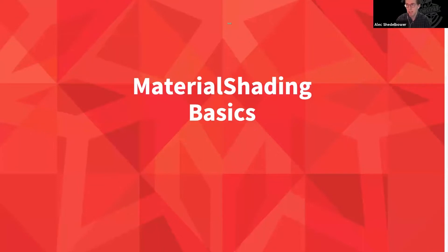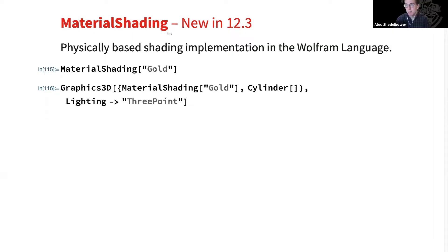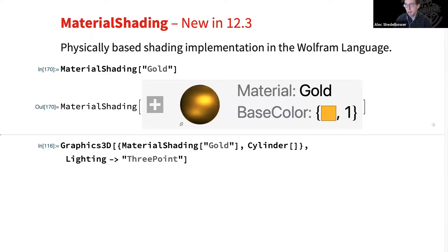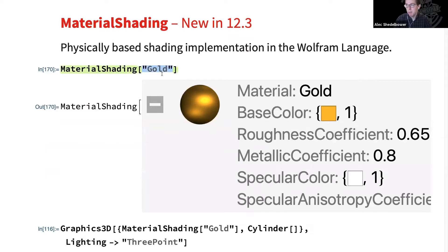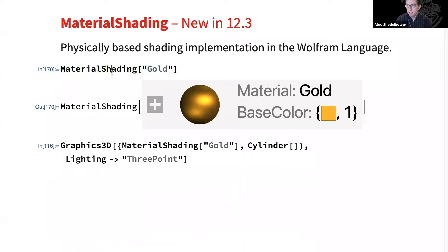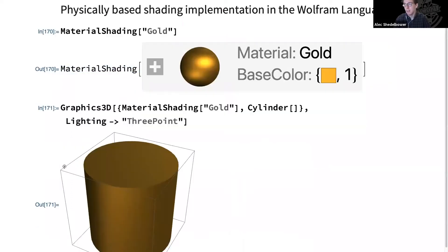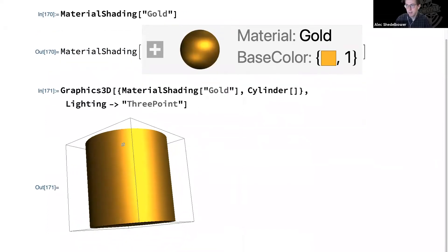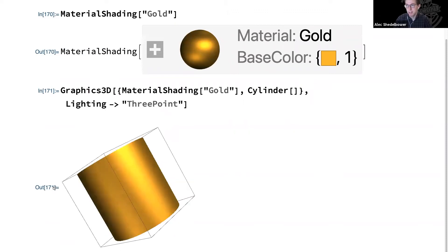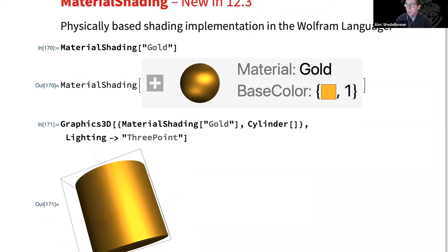Now we'll go into how to use it with material shading. So MaterialShading is a new symbol as of version 12.3, and it's our physically based shading implementation in the Wolfram language. If you're familiar with any of the other recent shading functions like ToonShading or HatchShading, this one should be very familiar with the way it works. So if we evaluate by itself, we get this nice summary box where we see a preview of the material and some of its parameters. I'm using the named material preset gold here. And then we can just use this as a directive in our Graphics3D. In this case, I'm going to use it on a cylinder. And after using it, we have this nice gold metallic cylinder.